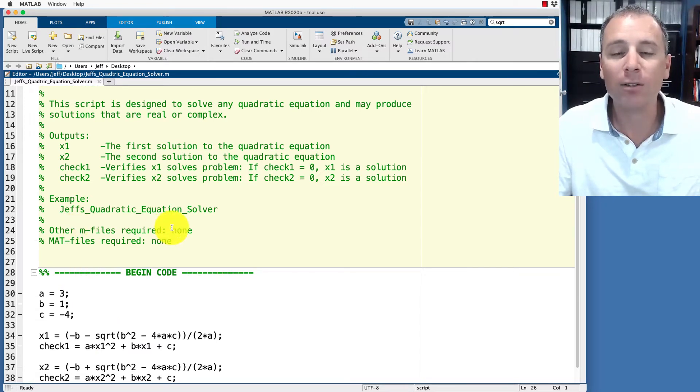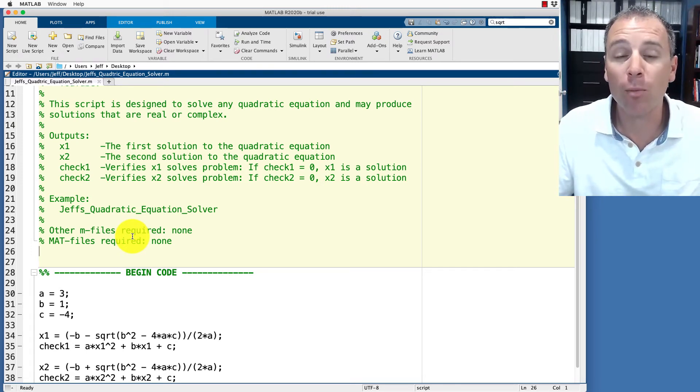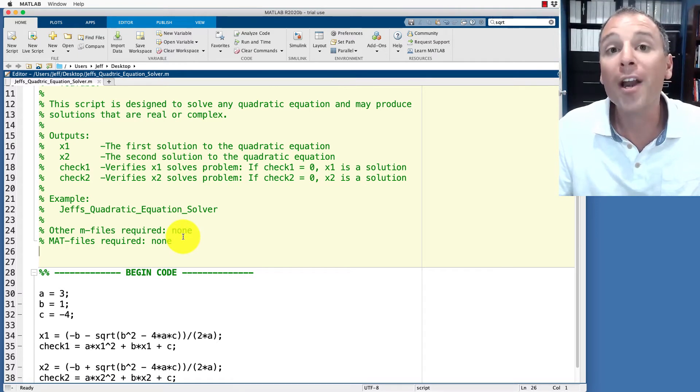In this case our script file is kind of rudimentary. We don't actually require any other files so I tell my users you don't need any other MATLAB files and you don't need any .mat files but I would recommend that you include this in your documentation so that later as you have functions that are more sophisticated, you specifically identify for your users what other things they need access to in order to make your code work.